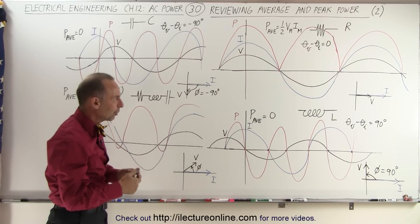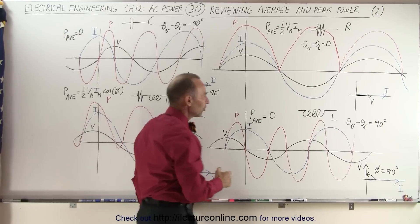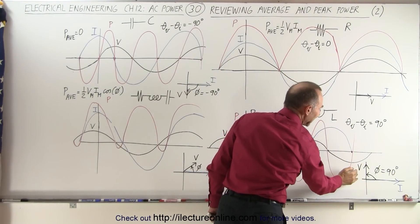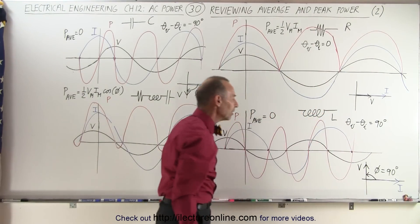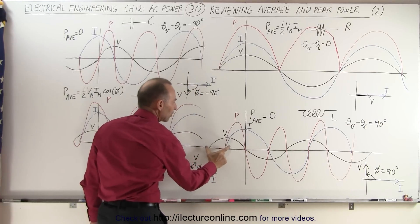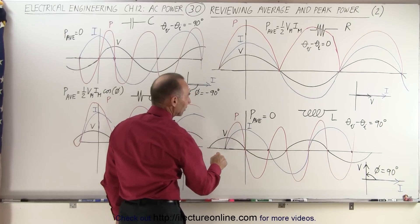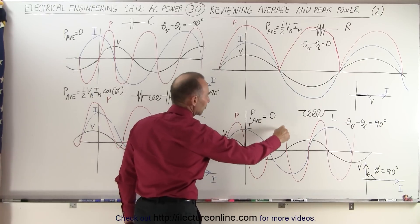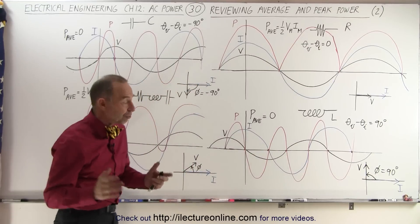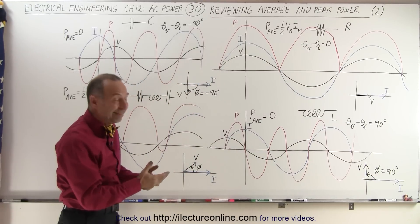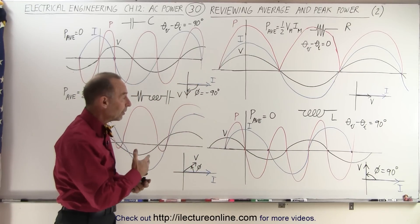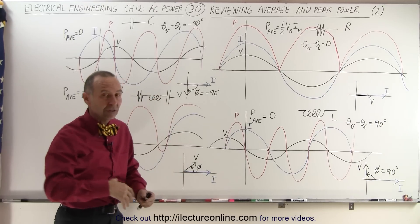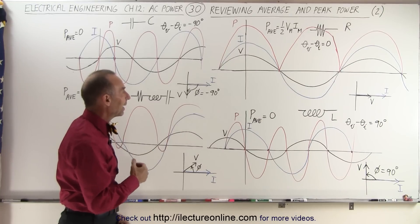If we now look at a purely inductive circuit, notice there's going to be a phase angle of 90 degrees between the voltage and the current. The voltage will lead the current by 90 degrees, which means the voltage appears 90 degrees to the left on the graph. The power delivered alternates between positive and negative such that the average power delivered is equal to zero. There's no resistor to dissipate the power; the inductor simply absorbs power and gives it back, so there's no net absorption of power.